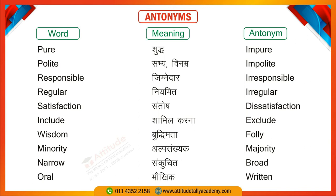Next is 'Polite' and 'Impolite.' For example: They are very polite; they are not impolite. Next is 'Responsible,' meaning someone who takes responsibility. For example: She is a responsible girl. 'Irresponsible' means someone who does not take responsibility. Next is 'Regular,' meaning consistent or routine, and 'Irregular' means inconsistent. For example: I do yoga regularly.